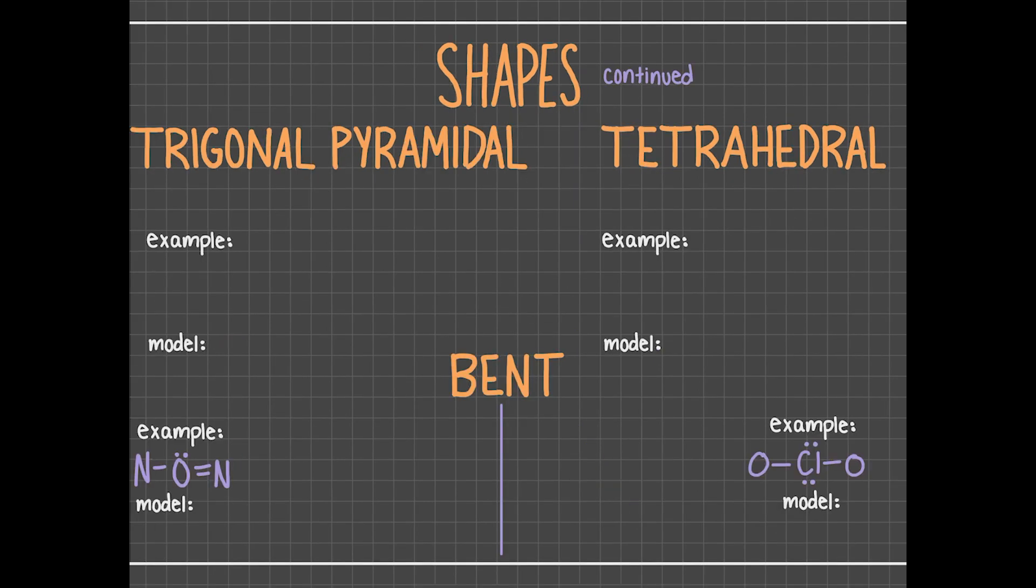The next shape we'll look at is the trigonal pyramidal. These molecules have three atoms bonded to the central atom and one lone pair on the central atom. If we look at PH3, it is a trigonal pyramidal molecule because there are three hydrogens bonded to a phosphorus, which has only one lone pair on it. Trigonal pyramidal molecules look like pyramids, hence their name. We draw one balloon-like shape on the central atom to represent the one lone pair that central atom has. Trigonal pyramidal molecules have bond angles that measure about 107 degrees.